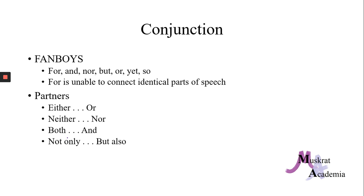Conjunctions are usually thought of as the FANBOYS: for, and, nor, but, or, yet, so. However, please note that for, as a fanboy or conjunction, is unable to connect identical parts of speech. You can say the cat and the dog went for a walk, but you can't say the cat for the dog went for a walk — doesn't work. There are also conjunction partners: either/or, neither/nor, both/and, and one that is most often forgotten — not only/but also.